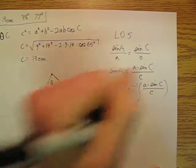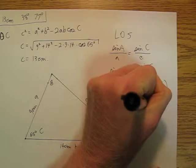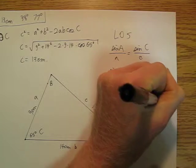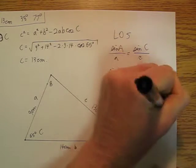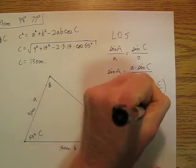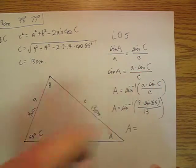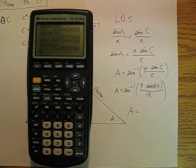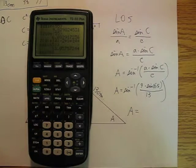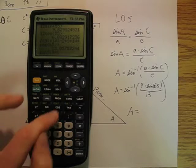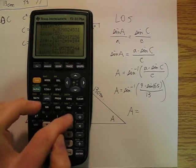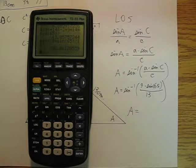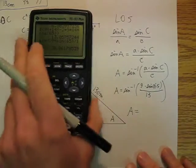Sine inverse of little a is 9 times the sine of big C, which is 65. And all of that is going to be over side c, which is 13. And we're going to plug that in on our TI-83. And we are going to say second sine 9 times sine 65, close that parentheses, divided by 13, close that parentheses, boom, 38.8. We're going to call it 39 degrees.